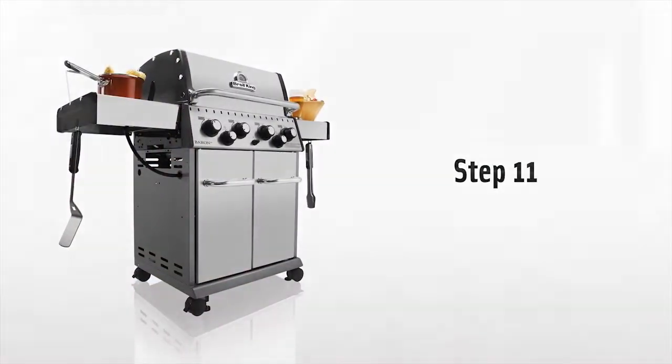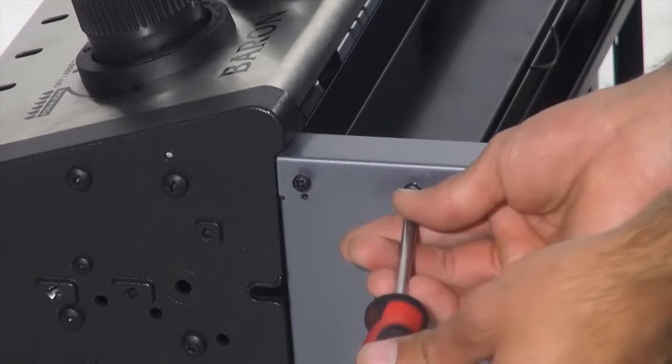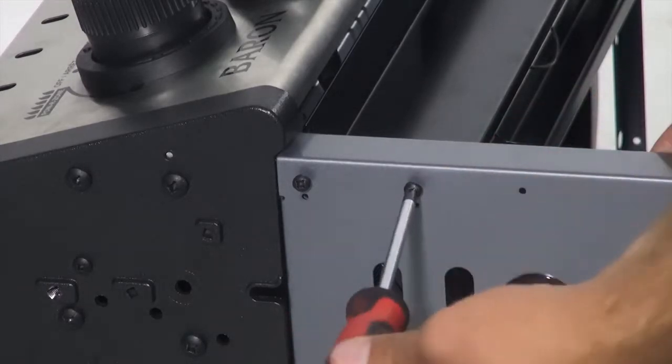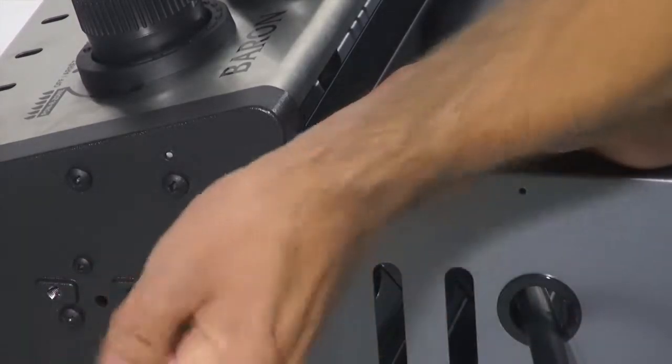Step 11. From Step 4, now it's time to tighten the four screws on the cabinet panel and door catch bracket assembly.